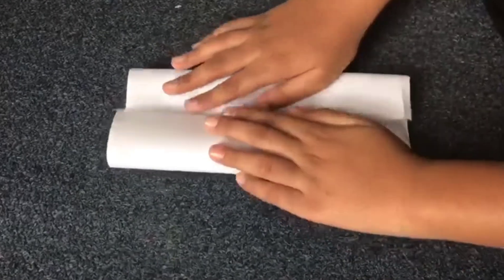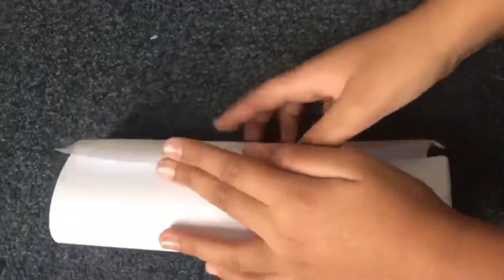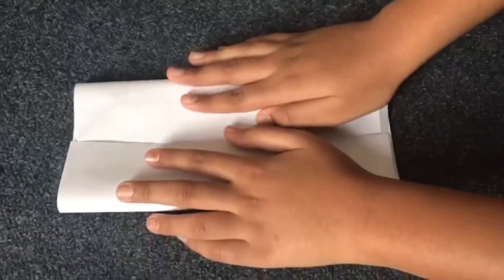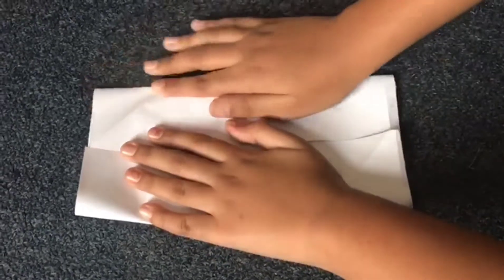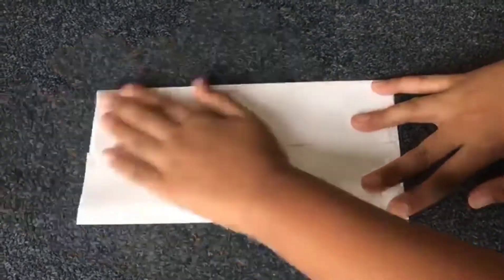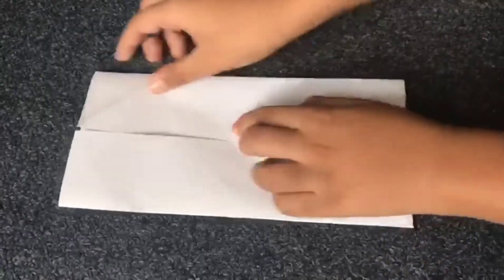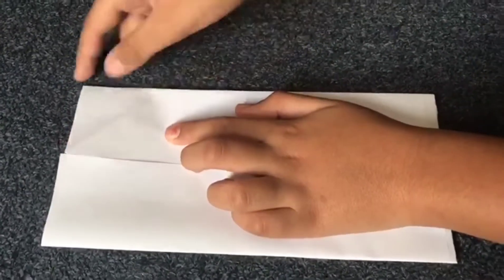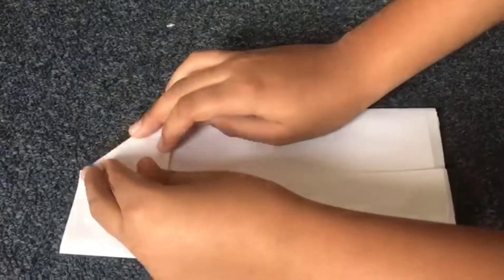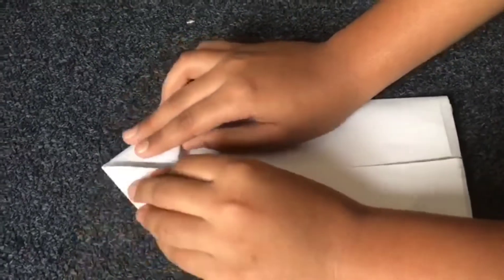Now I am going to fold from both the sides to the center. Press firmly on both sides and now I am going to fold the triangles on each side to meet at the center.